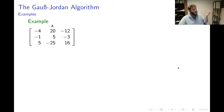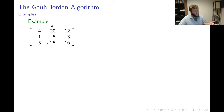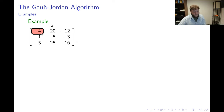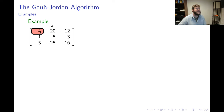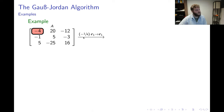Here's our first example of conducting the Gauss-Jordan algorithm on a specific matrix. Starting in the upper left-hand corner — the (1,1) position — I find a negative 4. Step 1 doesn't require a row switch since it's non-zero. Step 2: I scale row 1 by negative 1/4 to produce a 1 in the (1,1) position. That will be my first pivot. Now I need to clear the other entries in column 1: I add 1 times row 1 to row 2, and subtract 5 times row 1 from row 3.